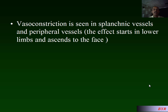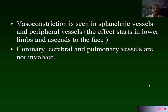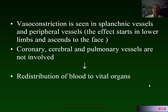Vasoconstriction is seen in the splanchnic and peripheral vessels. In peripheral vessels, the effect starts in the lower limbs and ascends to the face. So if a person comes with a small amount of blood loss, you will first find signs of vasoconstriction in the feet. As blood volume decreases further, vasoconstriction is seen in the upper limbs, and then even in the face. Coronary, cerebral, and pulmonary vessels are unaffected by this vasoconstriction, leading to redistribution of blood to the vital organs.